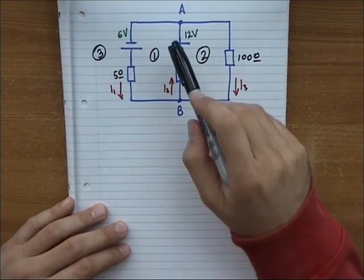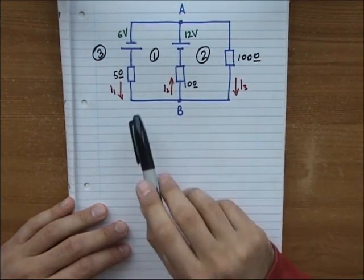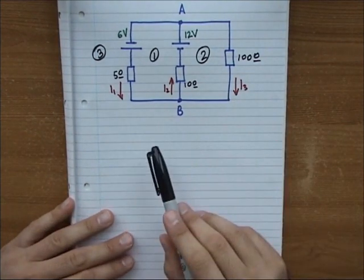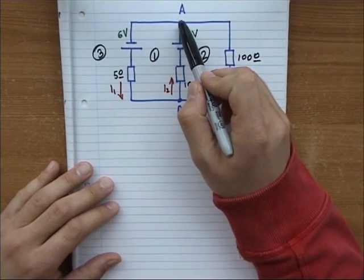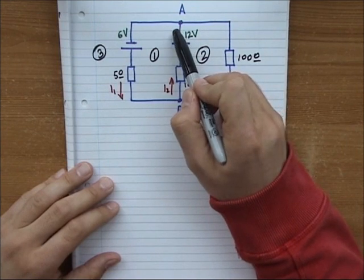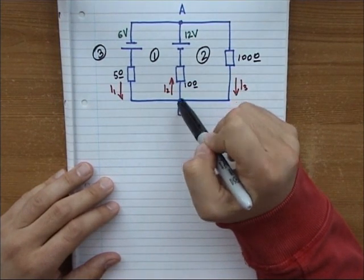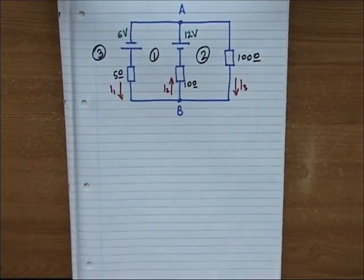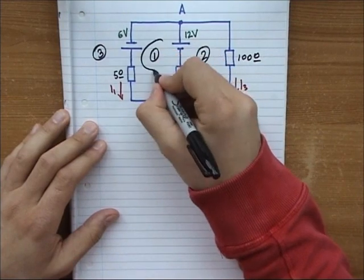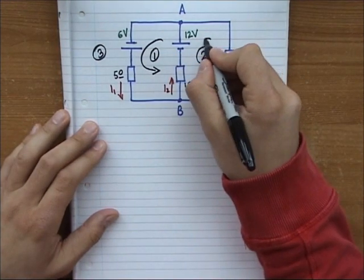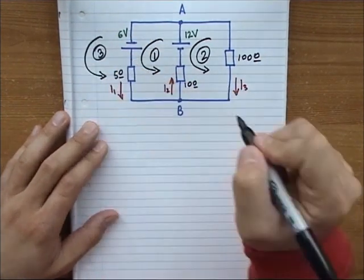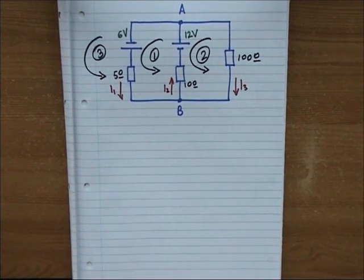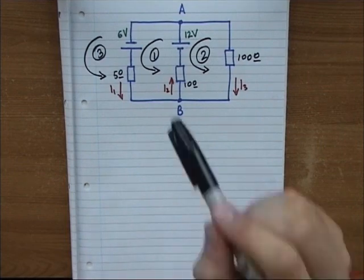I have assigned arbitrarily the branch currents with the directions that you see here. Also, since we are going to use KVL, I'm going to begin moving counterclockwise from node A through the circuit through B and then back into A. So for mesh one I'm going to move like this, mesh two like this, and for the external mesh three like so.